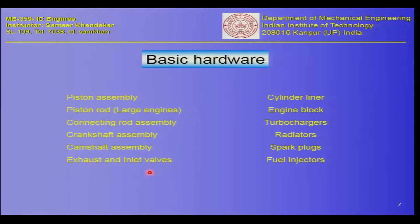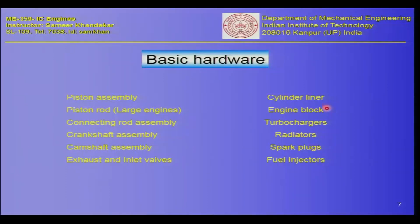We have also seen exhaust and inlet valve operation, cylinder liner inside which the piston moves up and down, and the engine block. There are also other systems in an IC engine, such as turbochargers and radiators or heat exchangers to dissipate heat. We have seen spark plugs for ignition — in petrol engines a spark plug is needed, while in diesel engines compression itself is responsible for auto ignition.